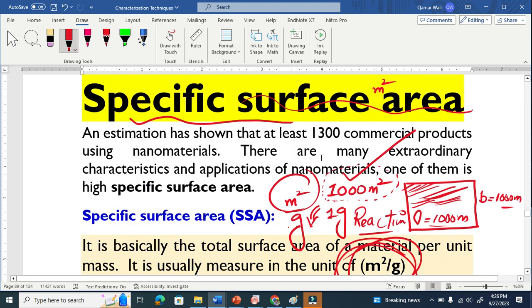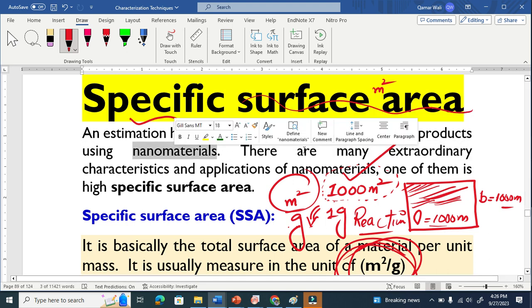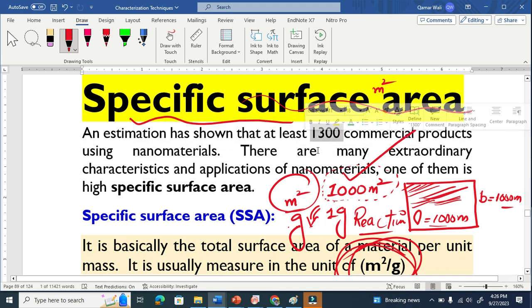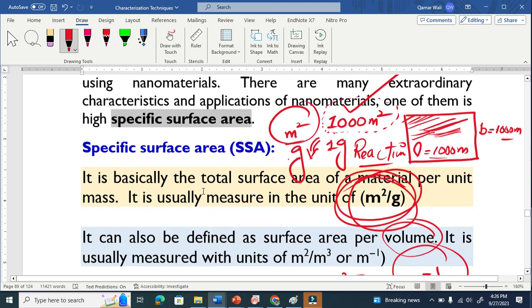Because of this property of a nanomaterial, you can see here that I just got this from one report: there are 1300 commercial products basically using nanomaterial. This is a very huge number and it's growing. Why it's growing? Because of the extraordinary properties of a nanomaterial, which one of them is specific surface area.